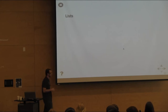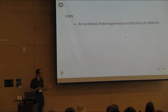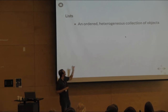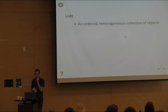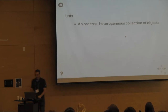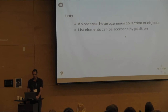Where you start to see divergence between languages is when you talk about data structures like lists or dictionaries. In Python, a list is an ordered, heterogeneous collection of objects — it can have different types. In many languages that's not possible, but in Python a list can have one element be an integer and another be a string.